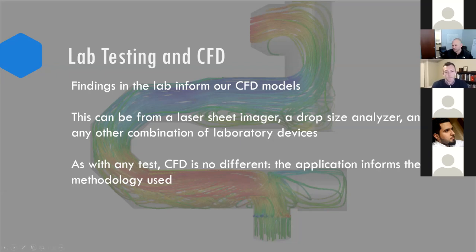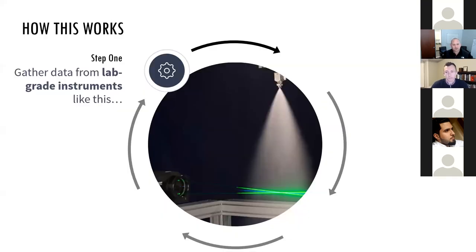Drop sizes — and we'll get into this a little bit — it's not a single drop size. Oftentimes the software can make assumptions, and those assumptions can lead to very different outcomes. So step one: we gather data from the lab using our lab-grade instruments. Kyle, can you describe what we're looking at here with this particular instrument? Sure — this is a phase Doppler interferometer. Every droplet that passes through the intersection of these laser beams is characterized for size, velocity, and count.